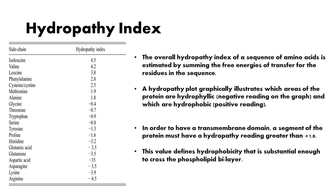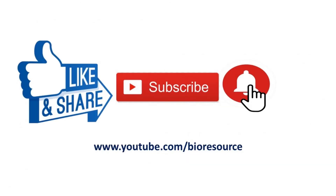In order to have a transmembrane domain, a segment of the protein must have a hydropathy reading greater than positive 1.8. This value defines the hydrophobicity that is substantial enough to cross the phospholipid bilayer.